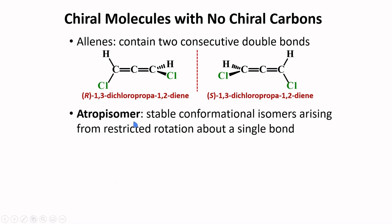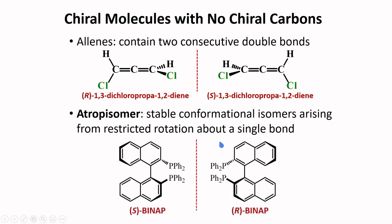We also have atropisomers. These are stable conformational isomers arising from restricted rotation about a single bond. As you remember, you can interchange conformational isomers by simple rotation. But some compounds cannot rotate easily if their groups are very large. For example, this type of molecule called BINAP. If you put very large substituents to these rings, then rotation around this single bond will be restricted. And so, we can have two mirror images. This compound is S-BINAP. The S designation can be obtained using the same method in designating allenes. This mirror image is R-BINAP.